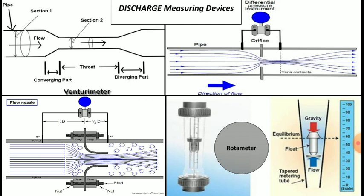So this is the pictorial representation of discharge measuring devices. First one is venturimeter which consists of three parts: converging part, throat, and diverging part. Next one is orifice meter. Next one is flow nozzle. And last one is rotameter.